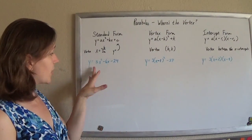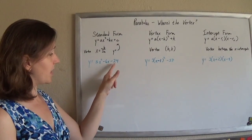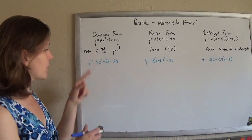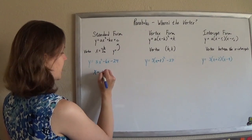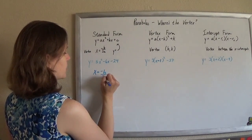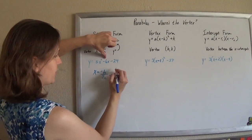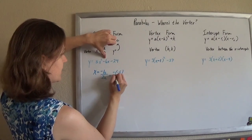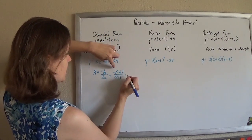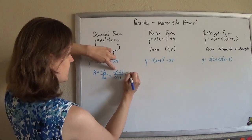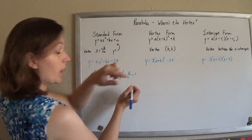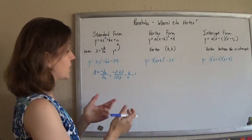If you're given it in standard form, just ax squared plus bx plus c, you can get your vertex by x equals negative b over 2a. So negative the b term, negative negative 6 over 2 times 3, and so positive 6 over 6 is 1. The x-coordinate of our vertex should be 1.